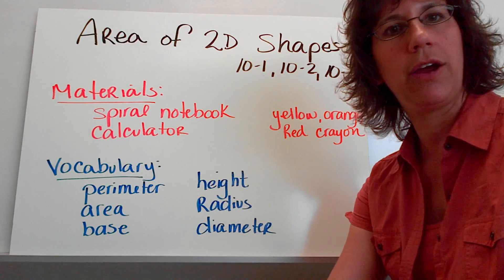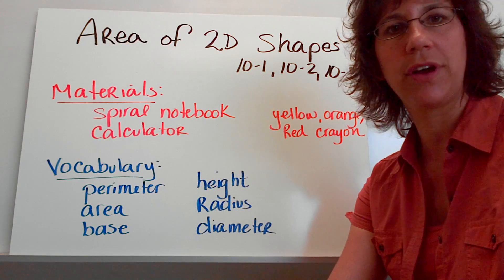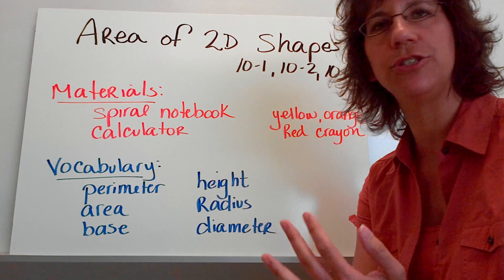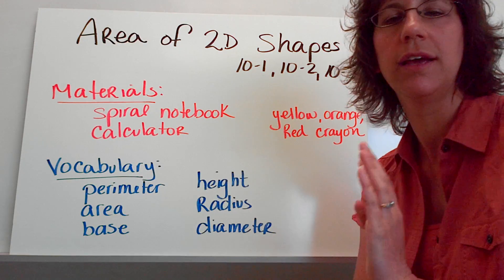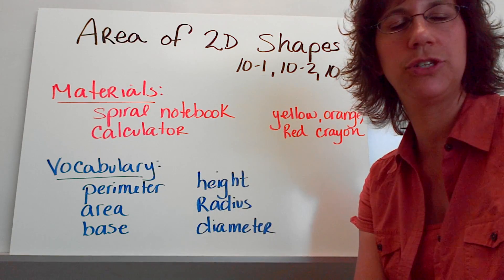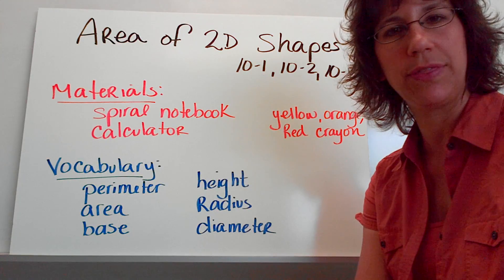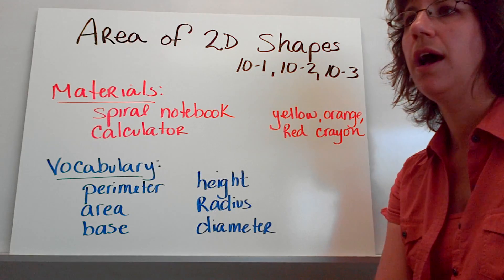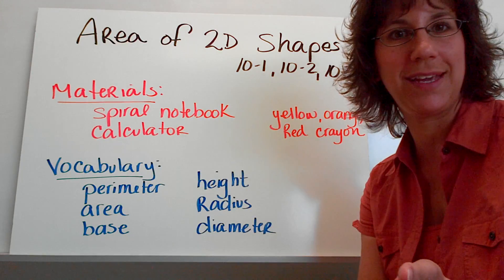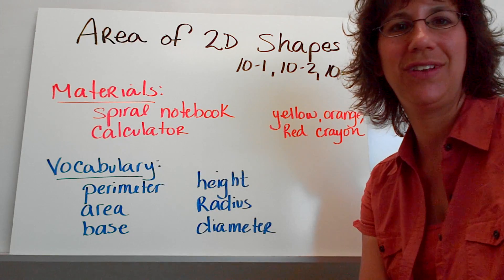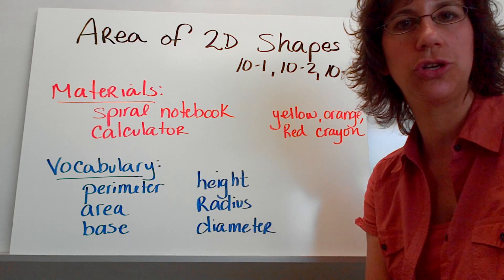Alright, today we're going to review the area of 2D shapes. This is something that you have covered before multiple times in elementary school and sixth grade. So we're going to fly through these, just make sure that you remember the formulas. It's real important that you remember those and write those down if you don't have them already. Tomorrow or next time we meet, we will be able to do an activity with the formulas to make sure that you have those memorized.